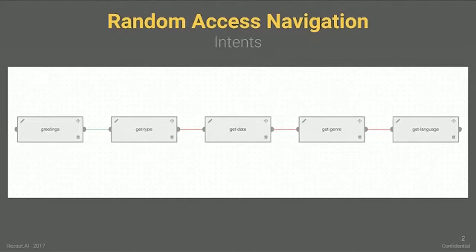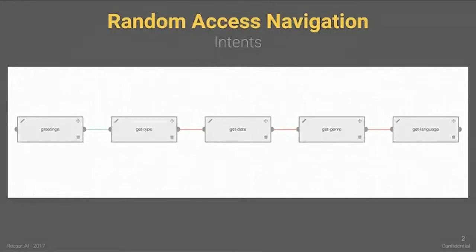So in terms of intents, this would be designed as: greetings, getting the type — is it a movie or a TV show? — then do we have the date, the genre, and the language? The flow would look very linear, and it would force the user to answer one question after another, which could be very painful. Like if you say 'I'd like to find a romance movie,' then you have the genre and the type already. Or if someone says 'Can you get me science fiction movies released this year?' then we have more information. So what we actually need the bot to understand is not intents — it's entities.